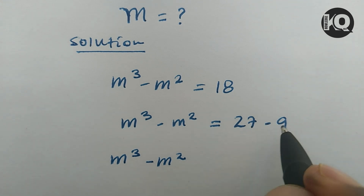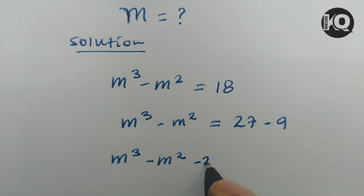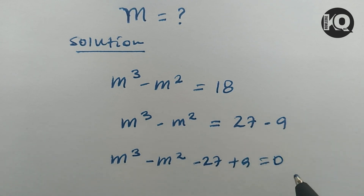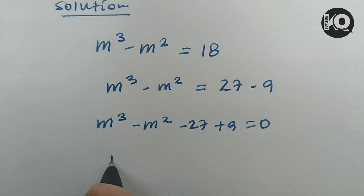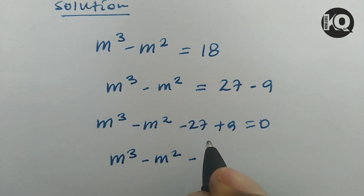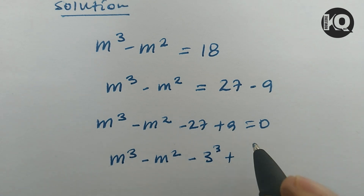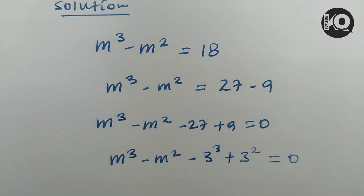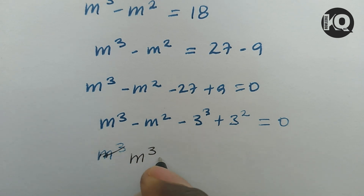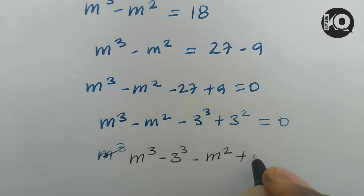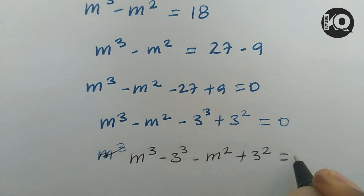Taking all terms to the left-hand side: m cubed minus m squared minus 27 plus 9 equals 0. We express 27 as 3 cubed and 9 as 3 squared, then collect like terms: m cubed minus 3 cubed minus m squared plus 3 squared equals 0.